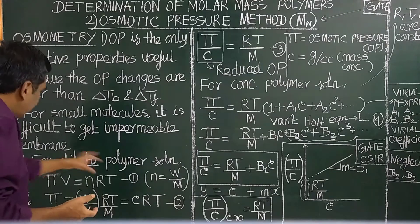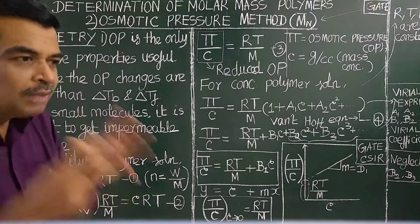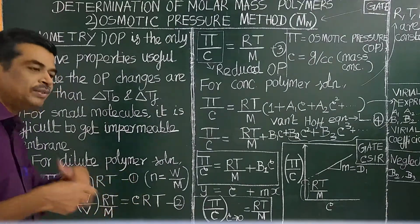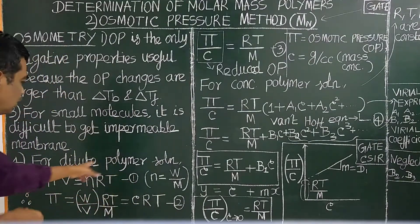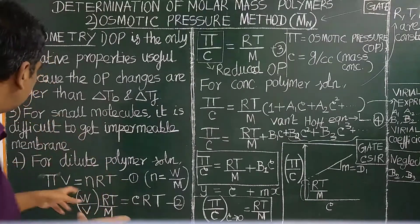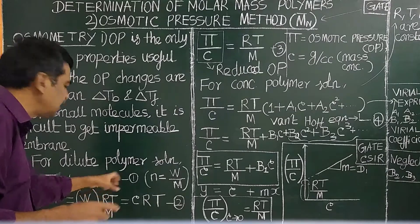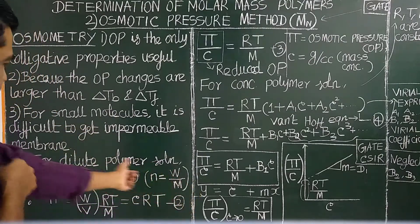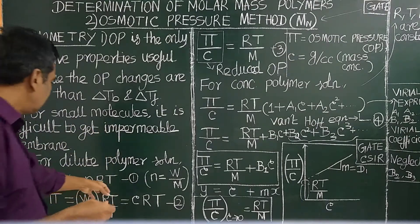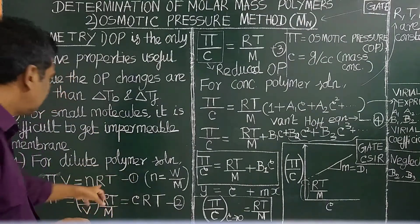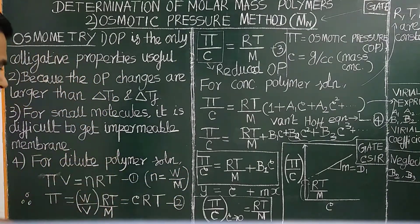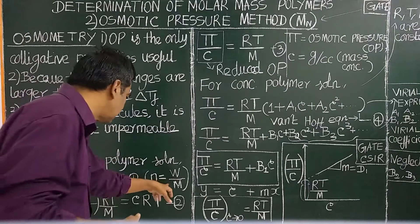For dilute polymer solution — an ideal solution — phi V equals nRT. We have studied this in plus 2. Here phi is the osmotic pressure, V is the volume of the solution, n is the number of moles of polymer dissolved in it, R is the universal gas constant, and T is the temperature. Where n equals W (weight) divided by molar mass M, so W by M gives the number of moles dissolved.